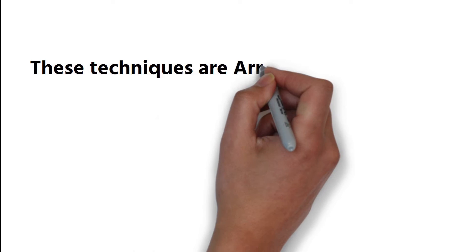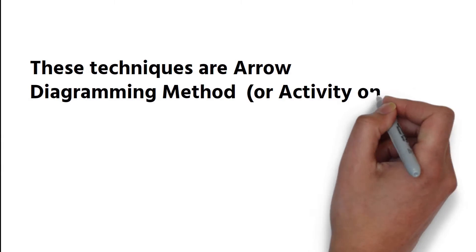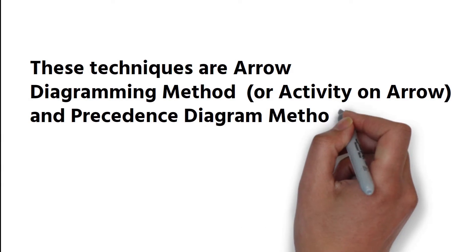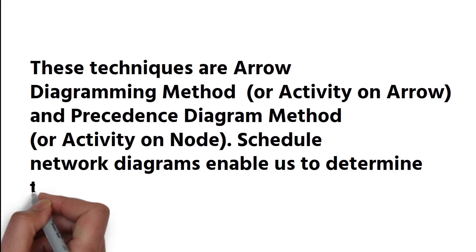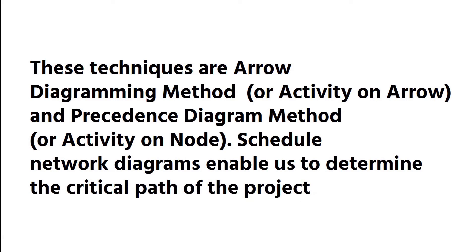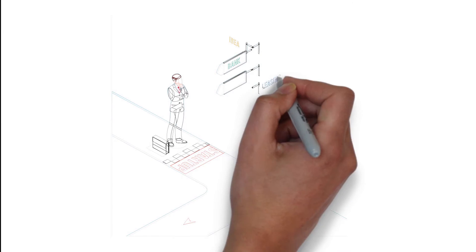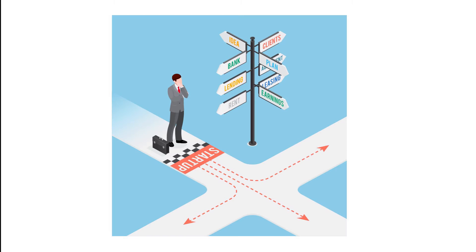These techniques are Arrow Diagramming Method, or Activity on Arrow, and Precedence Diagram Method, or Activity on Node. Schedule Network Diagrams enable us to determine the critical path of the project. The critical path is the longest path where a delay on it results in a project delay.